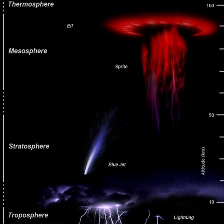Upper atmospheric lightning or ionospheric lightning are terms sometimes used by researchers to refer to a family of short-lived electrical breakdown phenomena that occur well above the altitudes of normal lightning and storm clouds. Upper atmospheric lightning is believed to be electrically induced forms of luminous plasma. The preferred usage is transient luminous event (TLE), because the various types of electrical discharge phenomena in the upper atmosphere lack several characteristics of the more familiar tropospheric lightning.